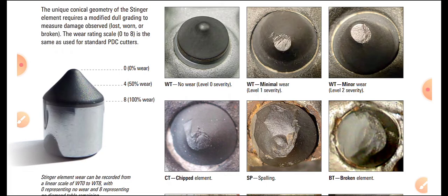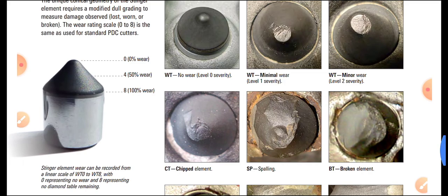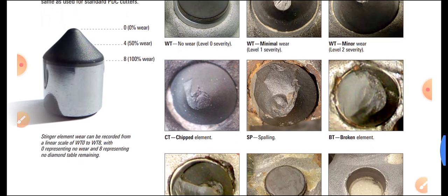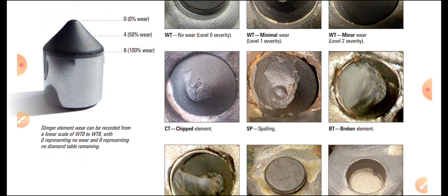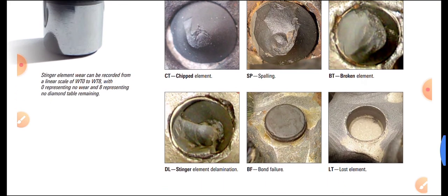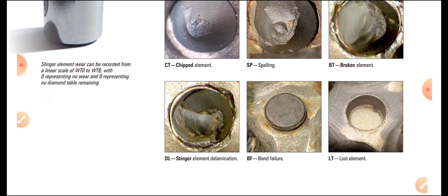Wear is also classified by level: Level 1 severity and Level 2 severity. On a percentage scale — 0% wear means fresh, 50% wear is partially worn, and 100% wear means the stringer is completely out of use. The last classification code is DL — Stringer Elimination — indicating the stringer has been fully eliminated.